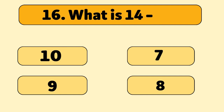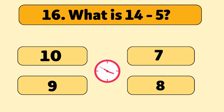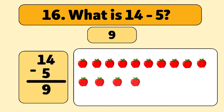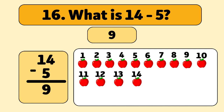What is 14 minus five? The answer is nine. We start with 14 apples and take away five. Let's count. One, two, three, four, five. We have nine apples left.